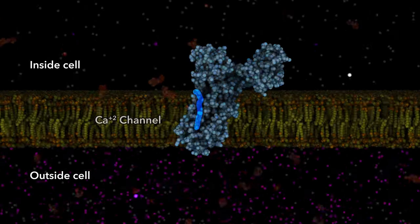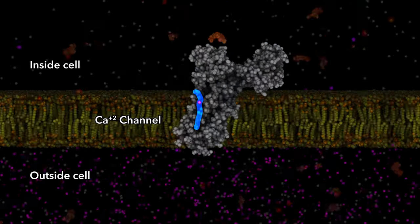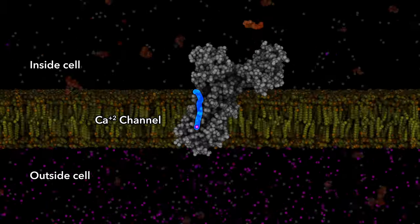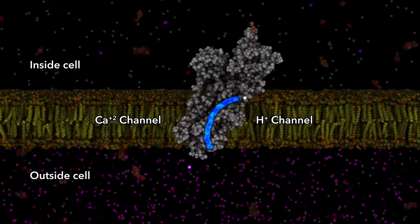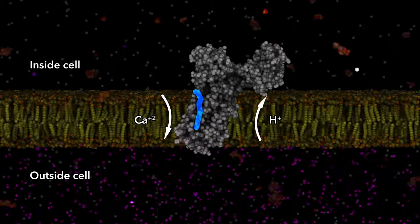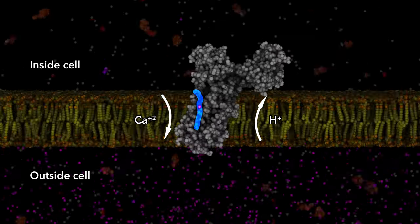With each transformation, channels inside the enzyme open and close, sending ions in opposite directions: hydrogen in and calcium out of the cell.